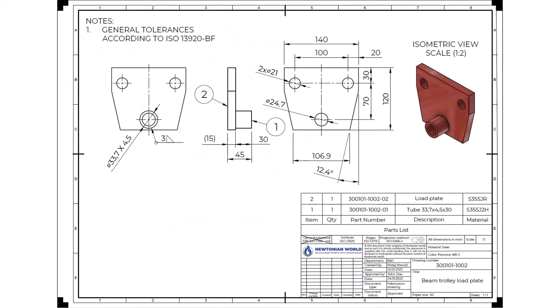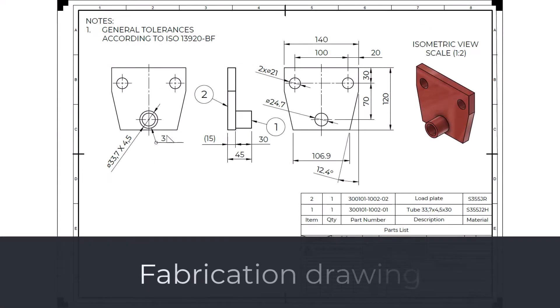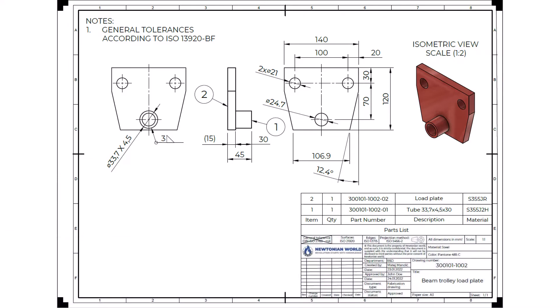The fabrication drawing is defined as the part drawing of an assembly of fully specified items permanently joined together. The components could be joined together by welding, soldering, or adhesive. Every component of the fabrication drawing should be fully specified, and the relationship between those components should also be defined.